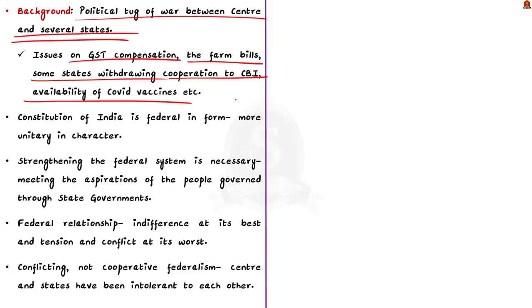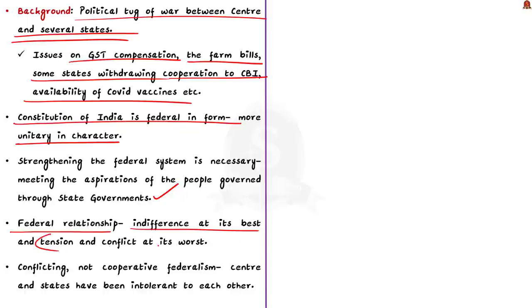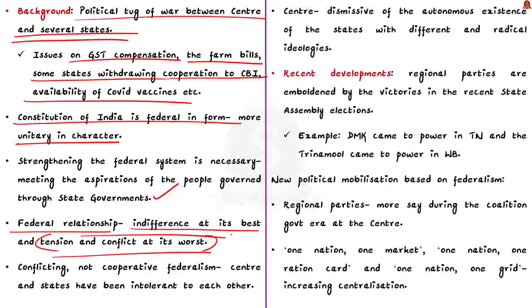The constitution of India is federal in form but is allegedly more unitary in character. Strengthening the federal system is necessary for meeting the aspirations of people who are governed through state governments. Therefore, center-state relations — the arrangement between the union government and the state government in regard to their power, function and responsibilities — have always been a crucial issue. Also, the history of federal relationship between the states and the center is full of indifference at its best and tension and conflict at its worst. It is needless to say that opposing political ideologies provide grounds for the ruling regime at the center and the government at the states to fight from time to time.